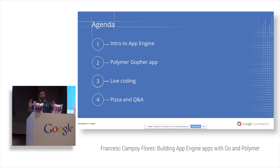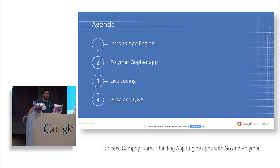The talk is going to be pretty much structured at the beginning, and then not at all. First I will do a little bit of an introduction to what App Engine is — we're going to be building everything on that technology. Then I will explain the app that we're going to build, which is called Polymer Gopher. And finally, I will actually live code it. Let's see if we have time and if I remember how to do it. At the end, there will be pizza and Q&A.